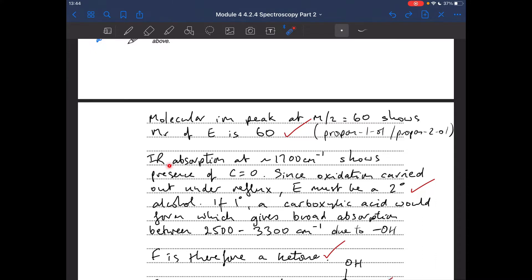And then the infrared absorption at about 1700 cm⁻¹ shows the presence of the C=O. So I always quote the wave number and the bond that's causing the absorption. And then since oxidation was carried out under reflux, E must therefore be a secondary alcohol. If it had been a primary alcohol, a carboxylic acid would form, which would give a broad absorption between 2500 and 3300 cm⁻¹ due to the OH group. Okay. So we're basically in that statement there, we're saying why E has to be a secondary alcohol.